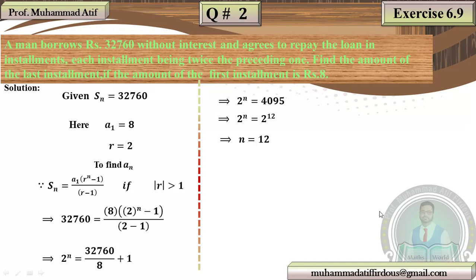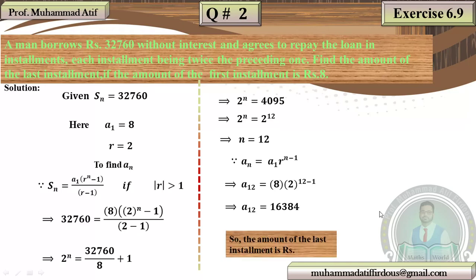Now we have to find the amount for the last installment. We use the geometric progression formula: A_N = A1 × R^(N−1). Replacing the values of N, A1, and R, and using your calculator, the answer is Rs. 16,384. So the last installment is Rs. 16,384.